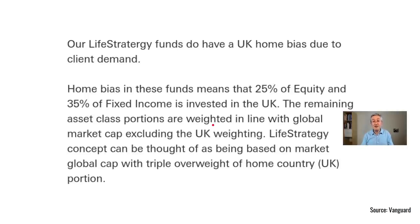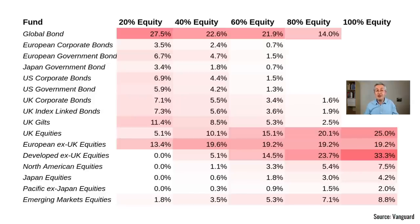The actual weights of the Vanguard Life Strategy funds are determined by a committee that meets every year. What they've chosen is a 25% equity allocation for the UK and a 35% UK allocation in the bond space. The rest of the portfolio is according to global market cap. The domestic overweight is roughly triple. For Life Strategy 100, the UK weighting for equity is 25%, but if UK equity is 4% of global equity markets, that's more than a six-fold overweight for UK equity.